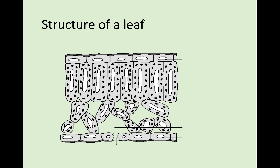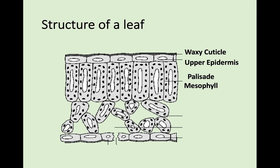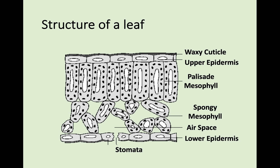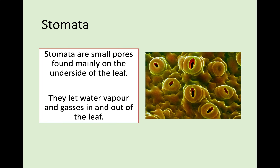Looking at the class diagram: you have your waxy cuticle on top, then the upper epidermis, then your palisade layer of palisade mesophyll, then your spongy mesophyll with those air spaces between cells where gas moves about, then your lower epidermis. And what we're going to concentrate on is that little gap between the cells at the bottom called the stomata, with things called guard cells on each side.